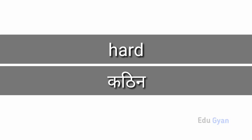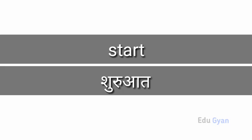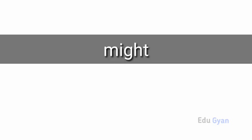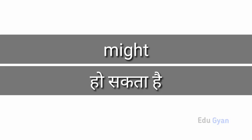Girl. Cross means par. Harm means get. Hard means cuttin. Start means start. Might means ho saktahay.